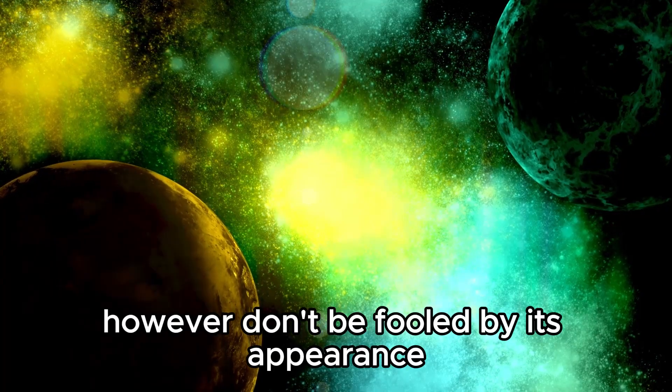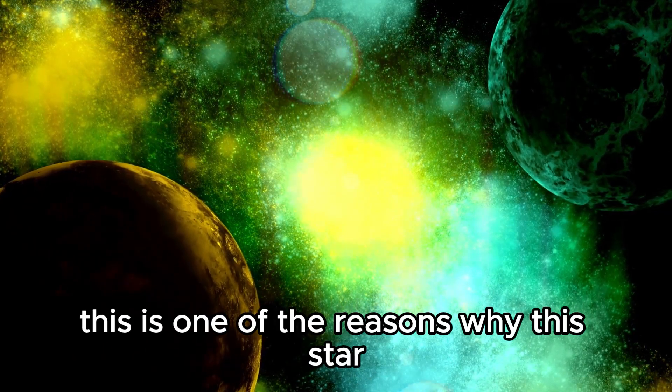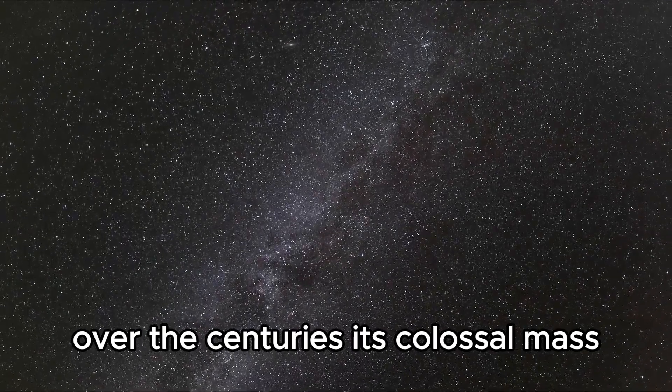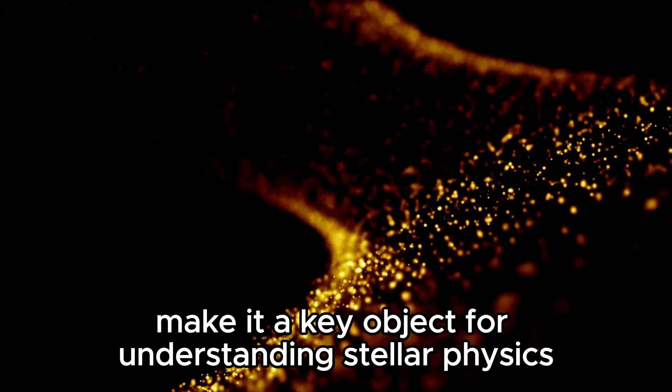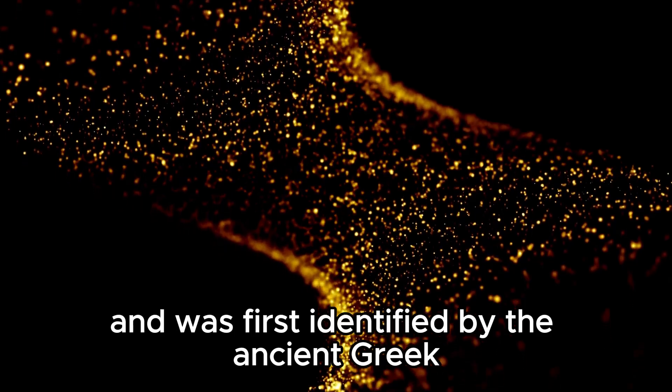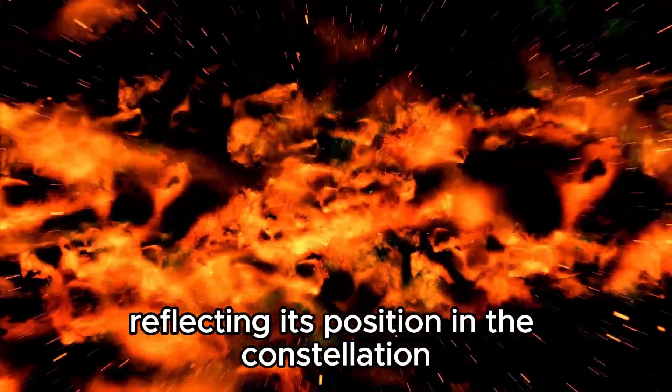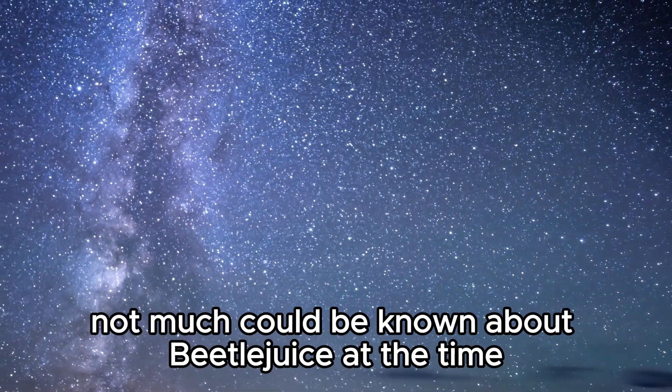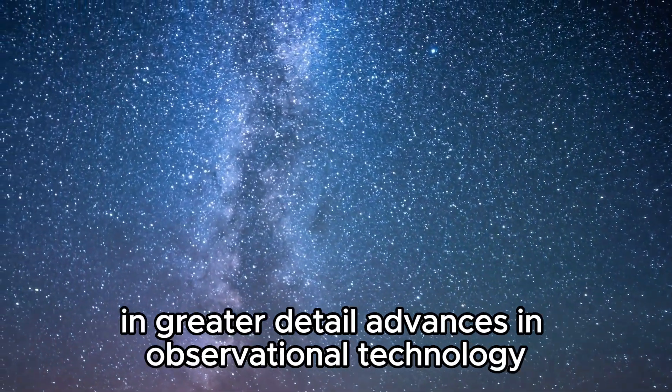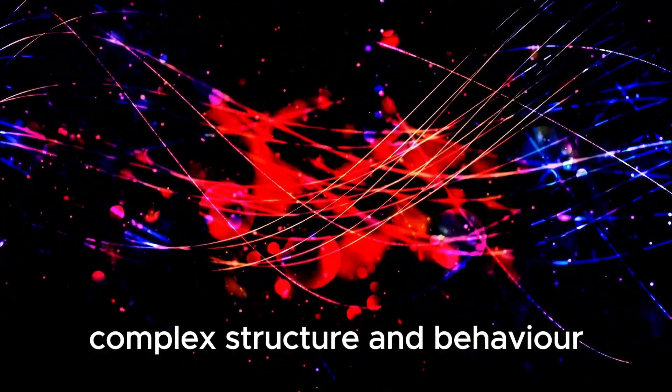However, don't be fooled by its appearance. Betelgeuse is a supergiant star that is about 20 times the mass of our sun. This is one of the reasons why this star has been the subject of numerous studies over the centuries. Its colossal mass and evolutionary stage make it a key object for understanding stellar physics. It has been a prominent object in the night sky and was first identified by the ancient Greek astronomer Hipparchus. Its name in Arabic means the Orion's armpit, reflecting its position in the constellation. Although not much could be known about Betelgeuse at the time, modern telescopes have enabled researchers to study this phenomenon in greater detail.